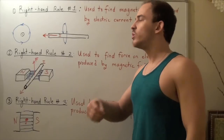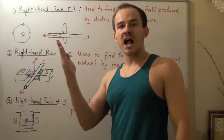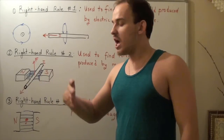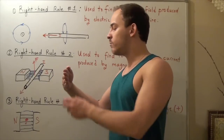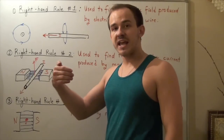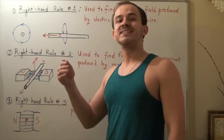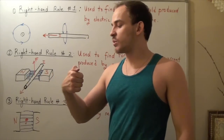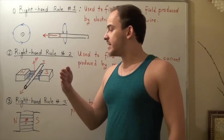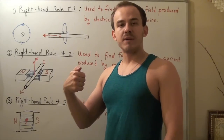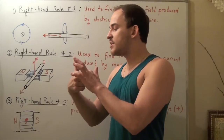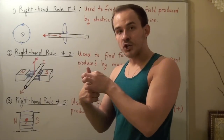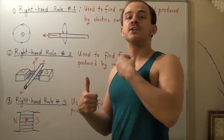I have to use my right-hand rule a little bit differently here. I take my entire palm and point it in the direction of my current. Since my current is coming out of the page, I point it out of the page. Then I have to rotate my hand in the direction that my magnetic field lines are pointing. Since they're going this way, I rotate my hand going this way. To find my force, I simply raise my thumb up — this will be the direction of my force, and notice it's perpendicular to both my magnetic field lines and my current.